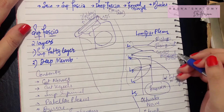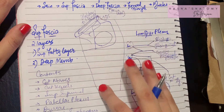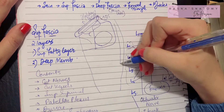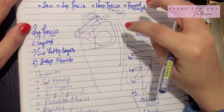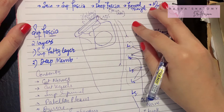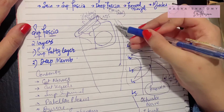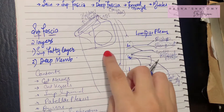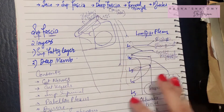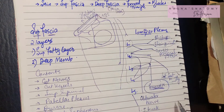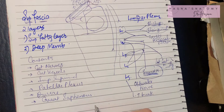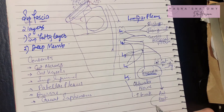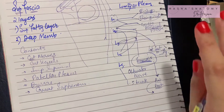We also need to supply the anterolateral and other areas of the thigh. The lateral cutaneous nerve of the thigh gives anterior and posterior divisions that supply the anterolateral part of the thigh along with the gluteal region. For the remaining area, we look to the femoral nerve, which gives two important divisions: anterior and posterior.